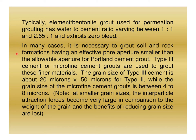In many cases it is necessary to grout soil and rock formations having an effective pore aperture smaller than the allowable aperture for Portland cement grout. Type 3 cement or microfine cement grouts are used for these finer materials. The grain size of Type 3 cement is about 20 microns versus 50 microns for Type 2, while microfine cement grout has a grain size of 4 to 8 microns. At smaller grain sizes, interparticle attraction forces become very large compared to grain weight, and the benefits of reducing grain size are lost.